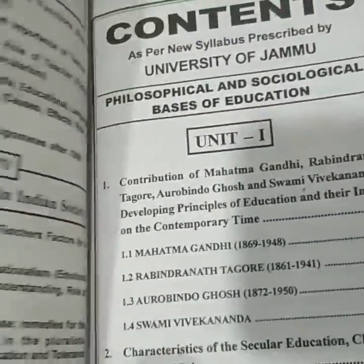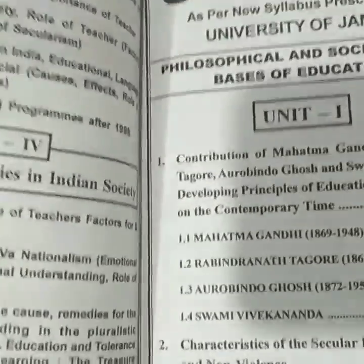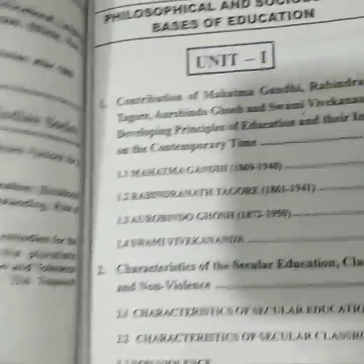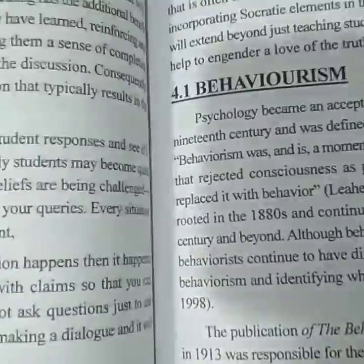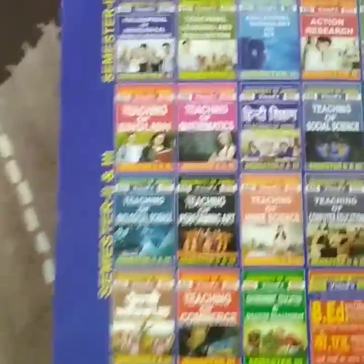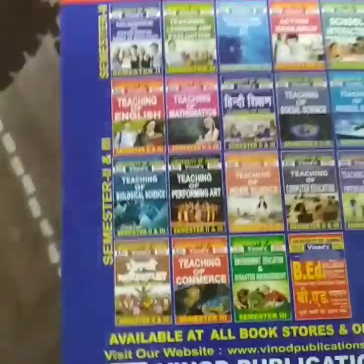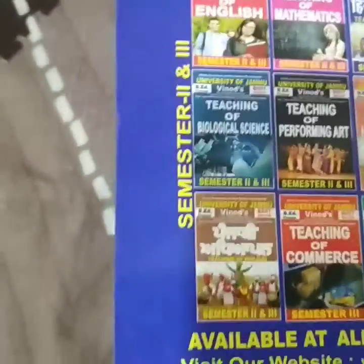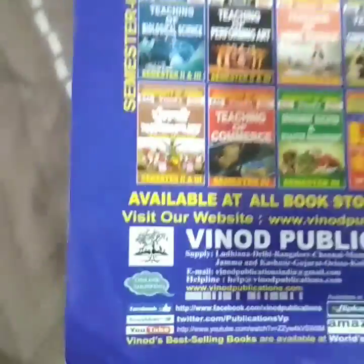The subtopics are clearly mentioned so that readers can easily find any topic and go directly to that page. On the back of the book, other books by Vinod Publications are also mentioned. The price of this book is ₹349.50 only, and it has 344 pages. I think this is a very good book — everything is mentioned in detail.